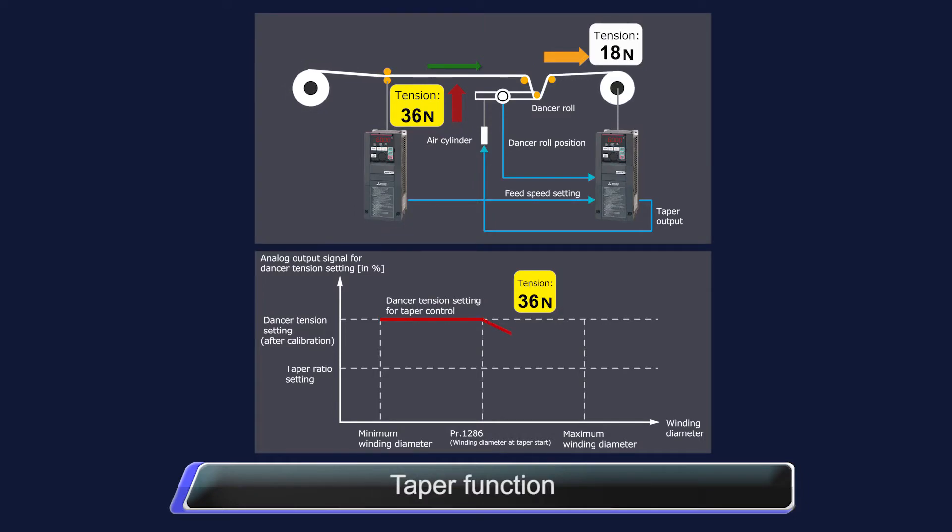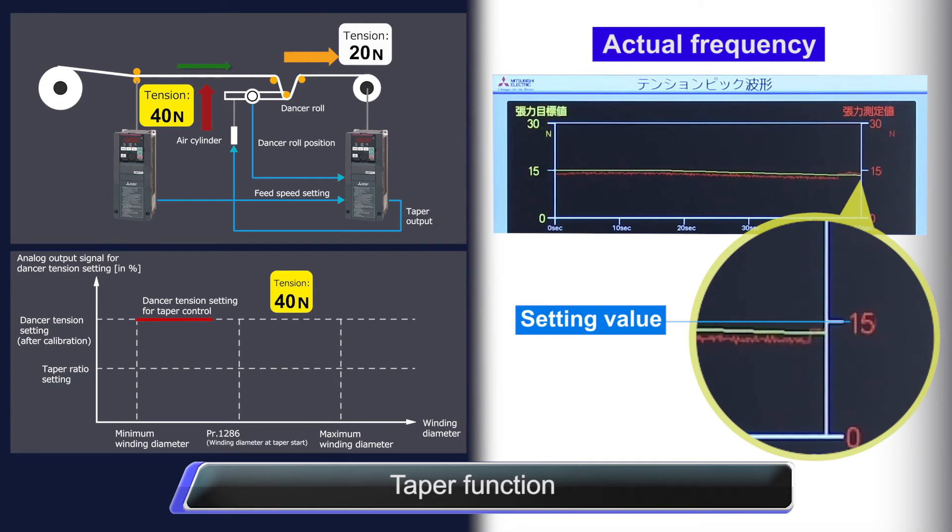The taper function prevents wrinkles or malformation caused by an increase in roll diameter by adjusting tension as the diameter of the roll changes.